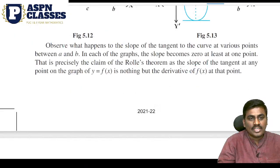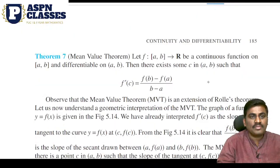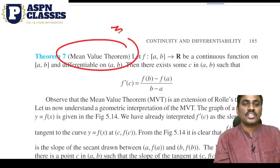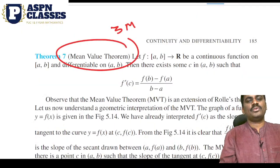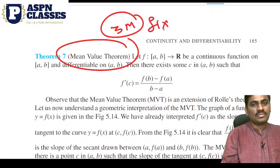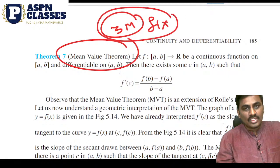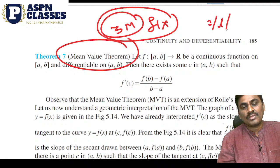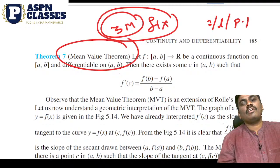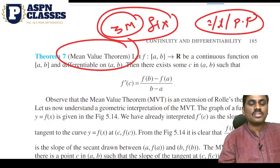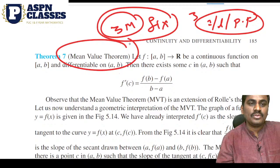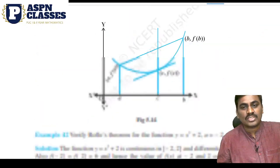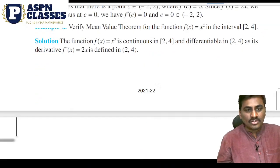The next topic is the mean value theorem and Rolle's theorem. Here, the fixed question comes from 3 marks. The question from inverse trigonometry differentiation, log, and parametric form — in these 3 concepts, the 3 marks are fixed. The mean value and Rolle's theorem are fixed — there is no chance to change the mean value. If it is complete, you need to solve all the examples.